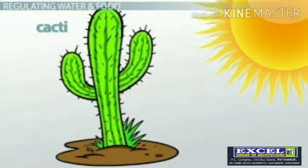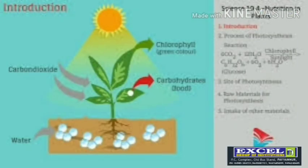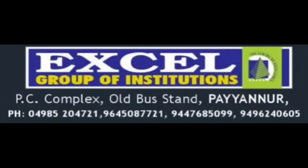To summarize this video: we began by understanding photosynthesis, which occurs in three steps. These steps allow autotrophs to synthesize their own food from inorganic sources using sunlight.